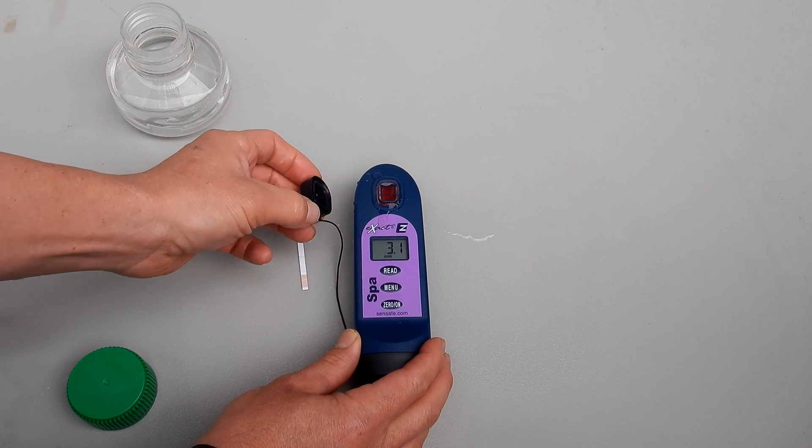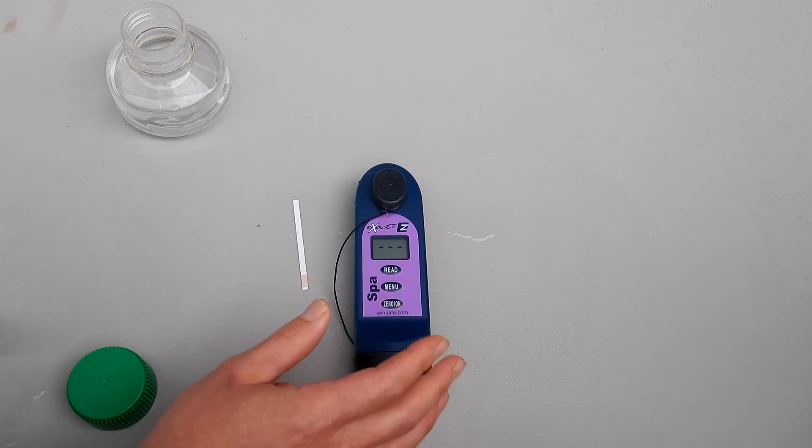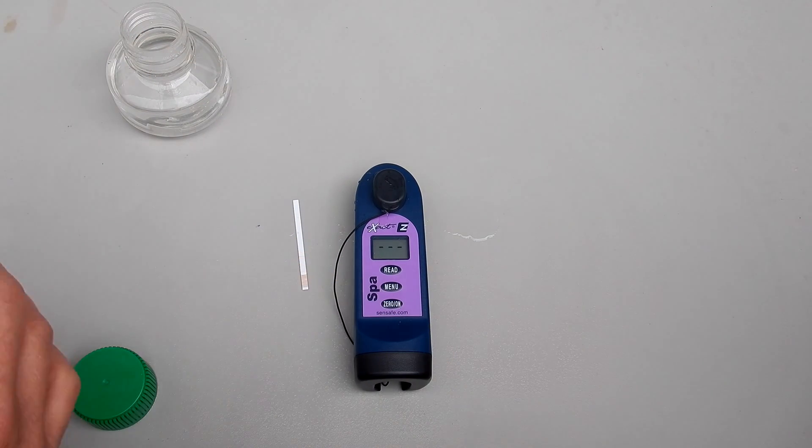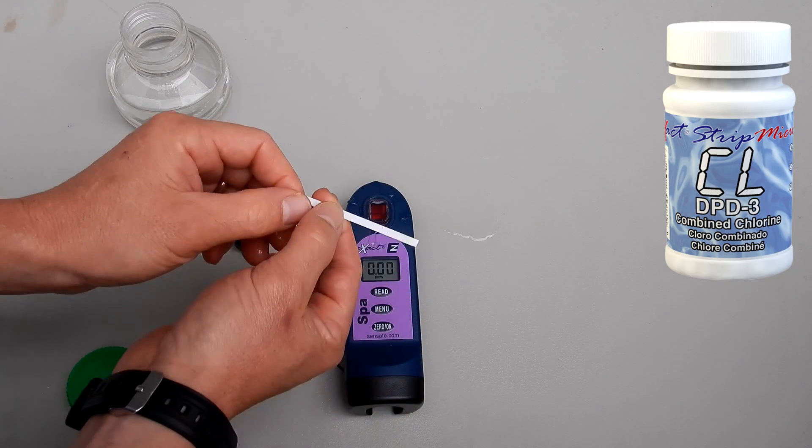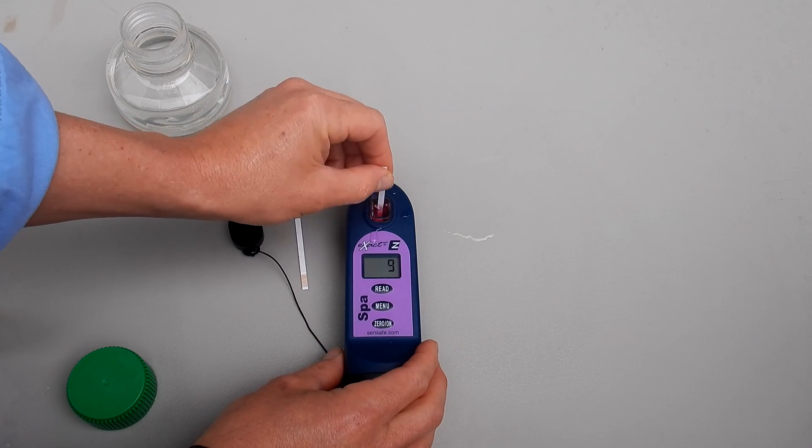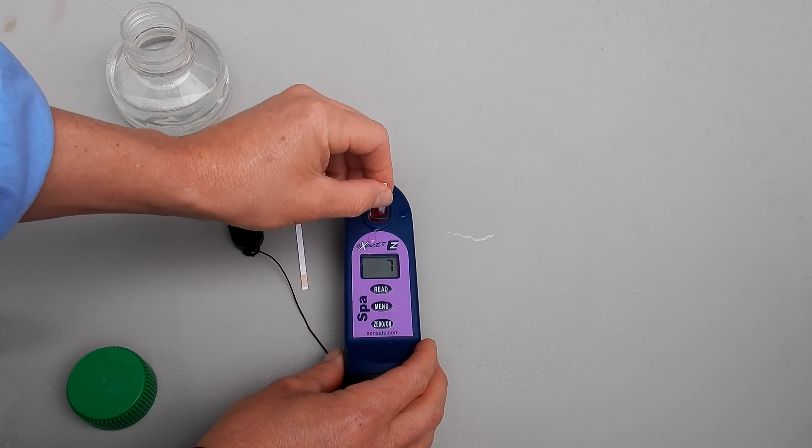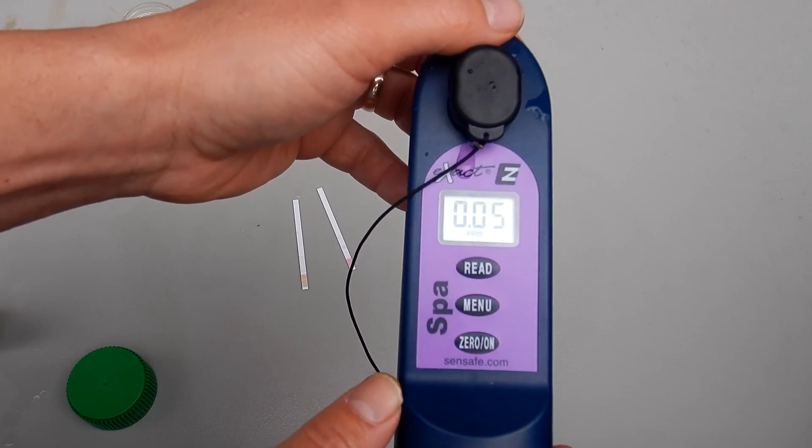To do the combined chlorine reading, you want to use the same water sample. Go ahead and hit zero. Then you'll take the CL-DPT-3 strip. Go ahead and hit read and start the strip and move it back and forth. This will give you a combined chlorine reading. It shows the combined chlorine at 0.05 parts per million.